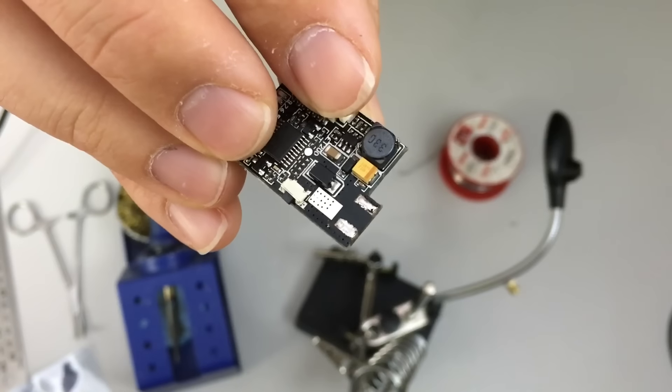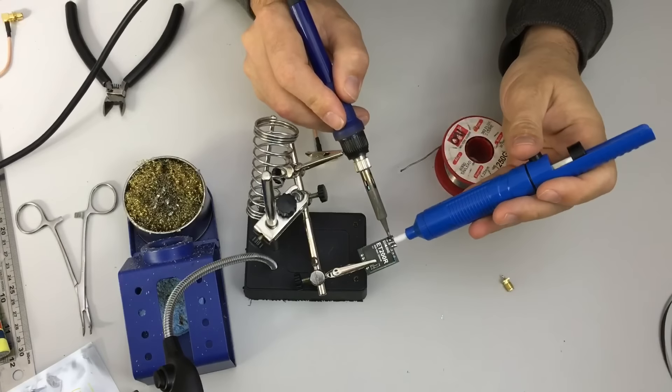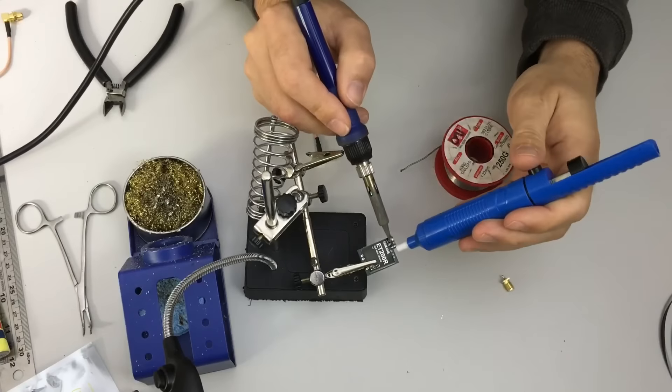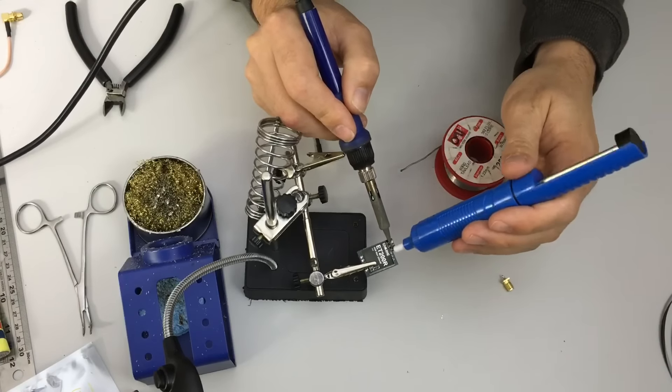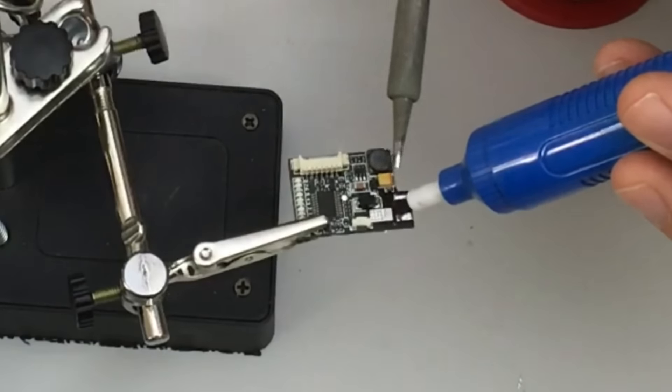I've got a bit of the old factory solder still left on there. So I'm going to just take my solder sucker and quickly remove the bulk of that. I find that fresh solder always works best.